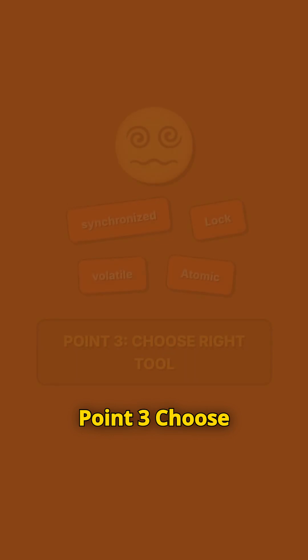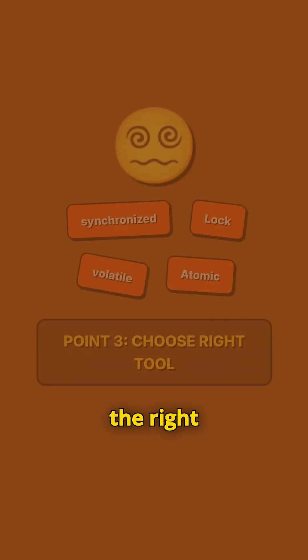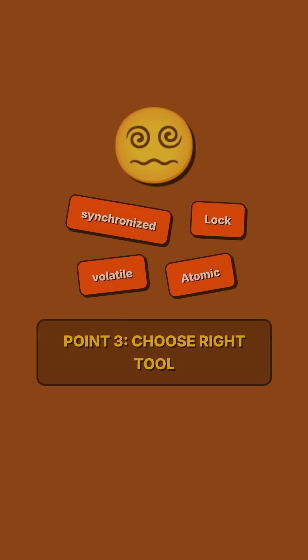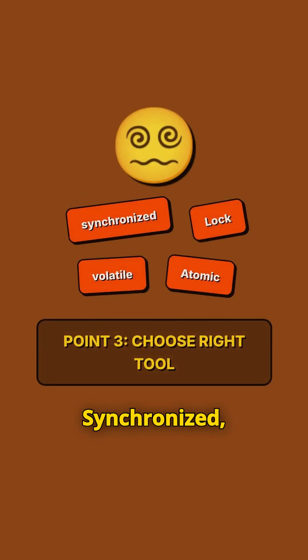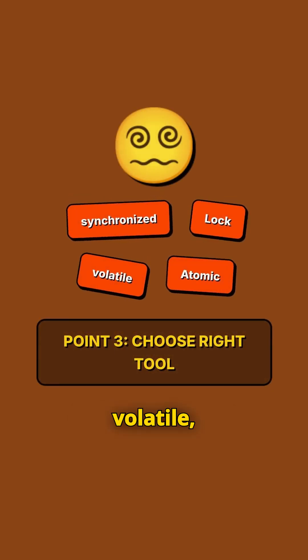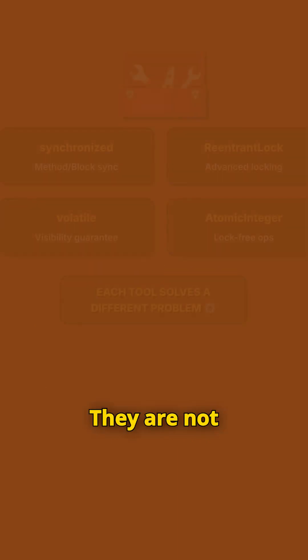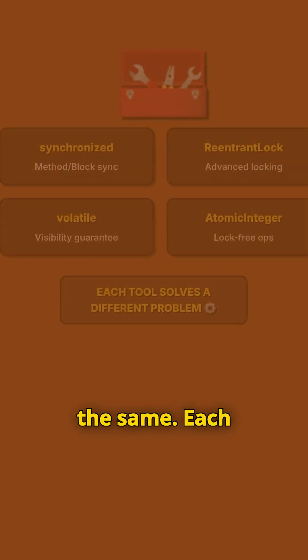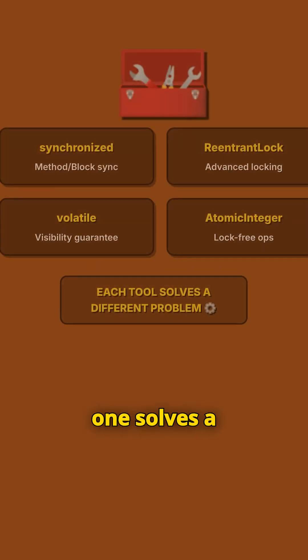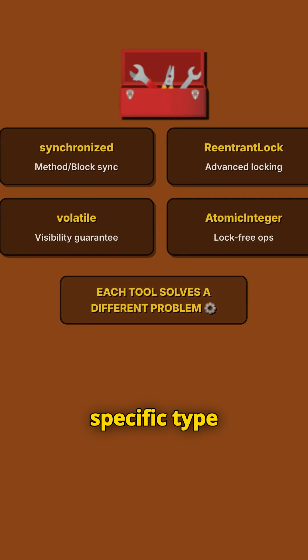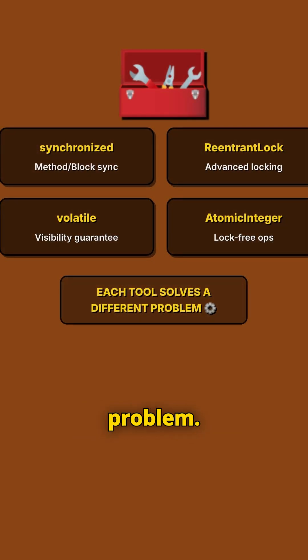Point 3: Choose the right tool. Synchronized, volatile, reentrant lock, condition — they are not the same. Each one solves a specific type of concurrency problem.